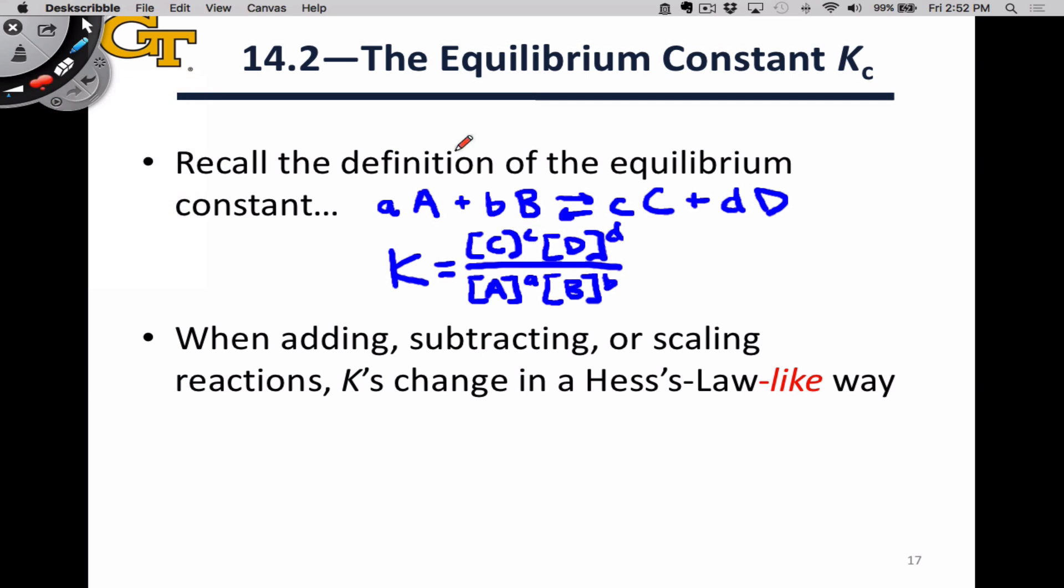What we'd like to be able to do is to somehow transform this given reaction to generate a new reaction. So we might scale it, multiply all of its coefficients by a certain value, we might add it to a different reaction, we might subtract it from a different reaction, we might invert or reverse it, we might make the products the reactants and vice versa.